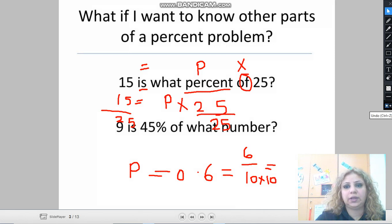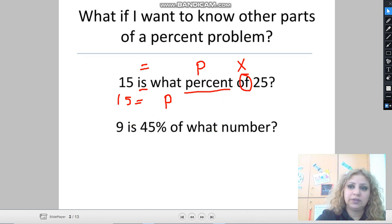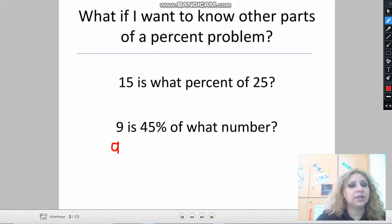Let me erase the screen here and start solving this again. So I am going to write 9, then I am going to change the word 'is' to the equal sign. 9 is equal to 45 percent, can be written as 45 out of a hundred.